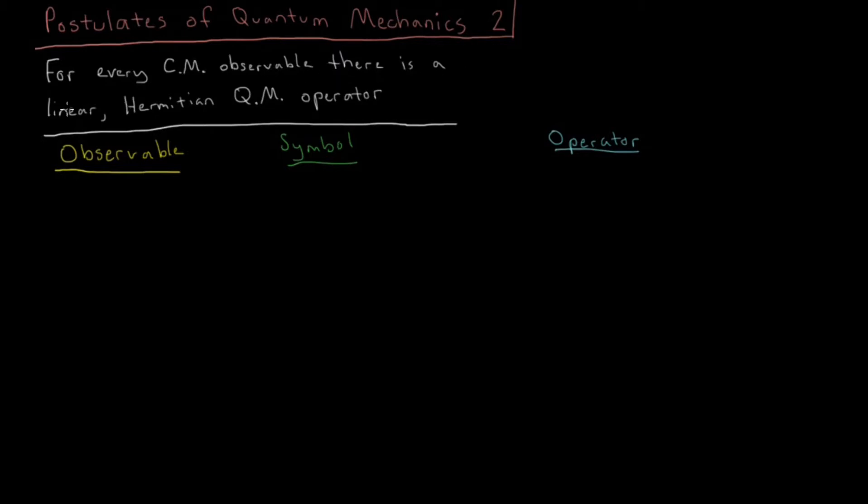So we talked in a previous video about what operators are, and specifically about what linear operators are. This part about Hermitian, I'm going to save that for a later video. I just want to get all these postulates done together, but we'll describe in detail the consequences of what something being Hermitian means. But for now we're going to leave that alone.